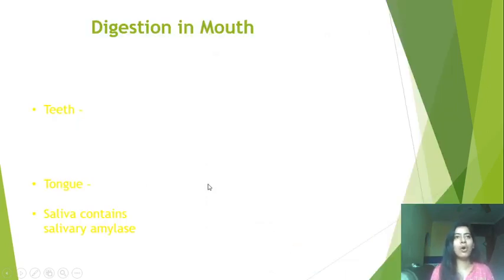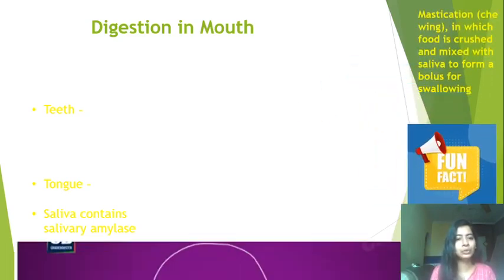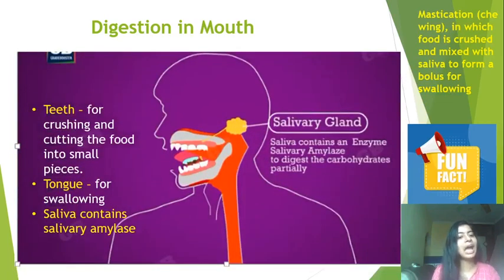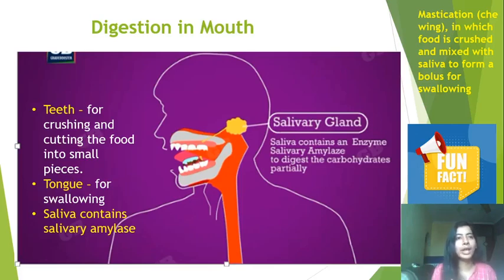Now let's begin with digestion in the mouth. The process of digestion starts in the mouth itself. The first contributors are the teeth, which are used for crushing and cutting food into small pieces. The tongue also helps in swallowing the food. Together, the tongue, teeth, and saliva convert the food into bolus — B-O-L-U-S. These bolus are circular formed things which make food more easily digestible.